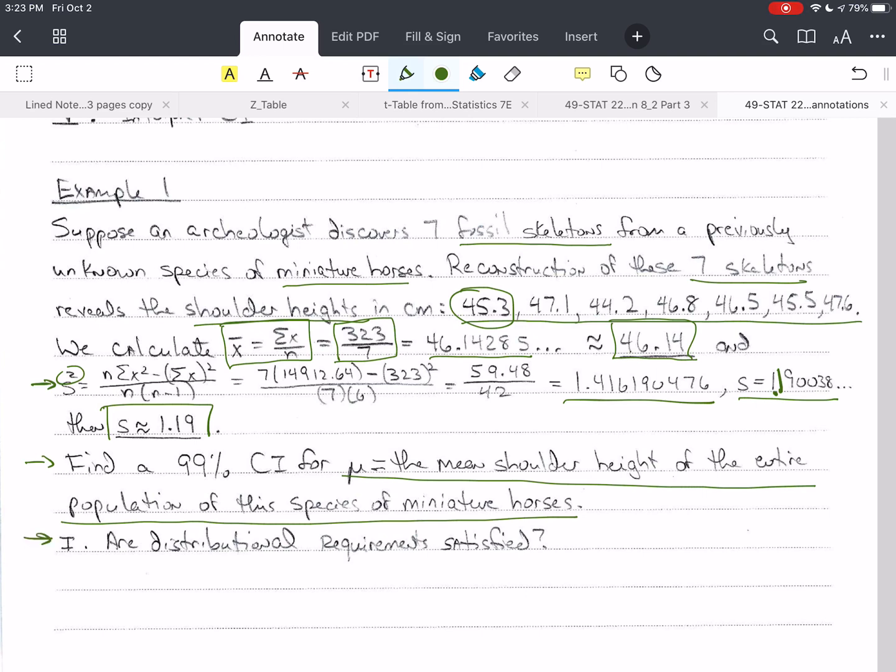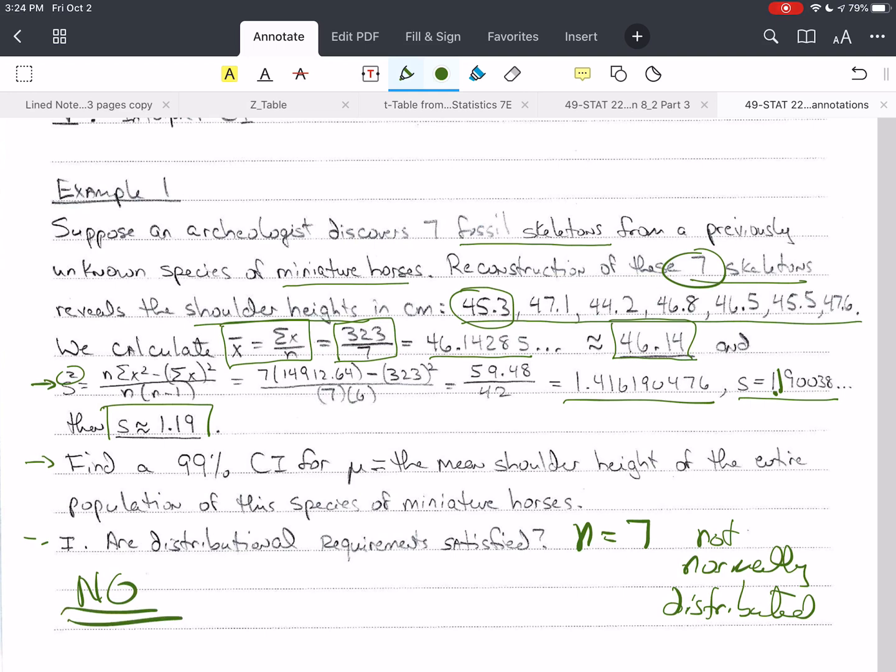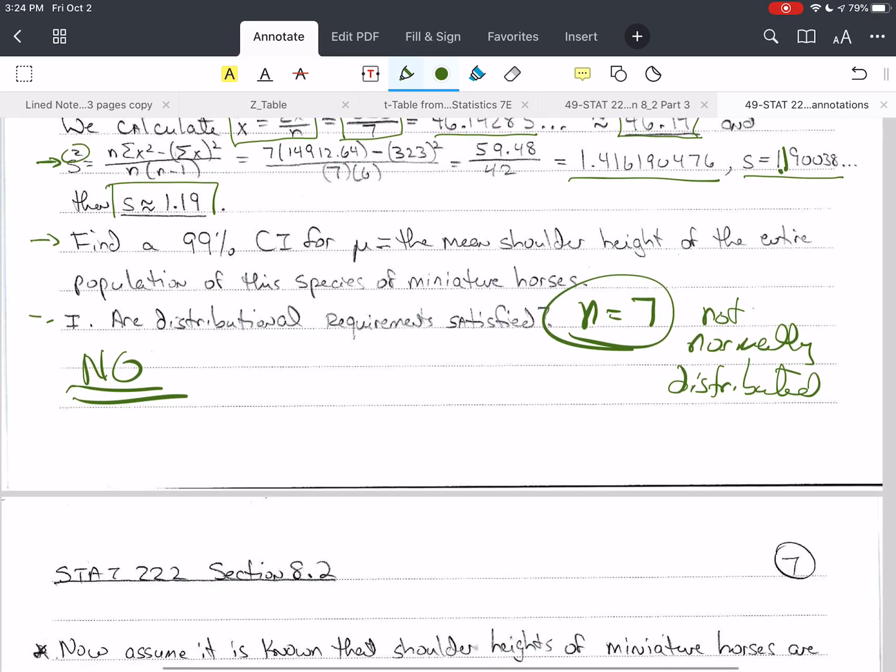Our first step is, are the distributional requirements satisfied? I look at my question, and there are seven skeletons, so n equals seven. Then I'm looking for, does it say anywhere in here that it's normally distributed? And it does not. So not normally distributed. If this is all the information we have, we can't do anything else, because we only have seven samples, and we don't know they're normally distributed.